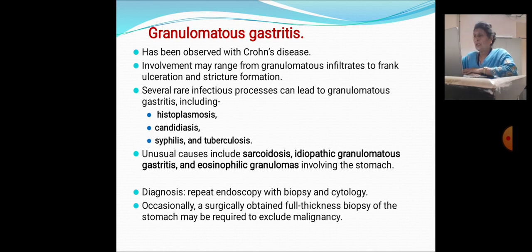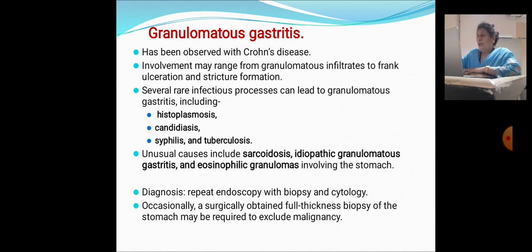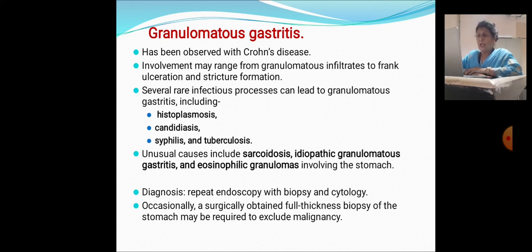Granulomatous gastritis has been observed with Crohn's disease; involvement may range from granulomatous infiltration to frank ulceration and stricture formation. Several rare infectious processes can lead to granulomatous gastritis, including histoplasmosis, candidiasis, syphilis, and tuberculosis. Unusual causes include sarcoidosis, idiopathic granulomatous gastritis, and eosinophilic granuloma involving the stomach. Diagnosis requires repeated endoscopy, biopsy, and cytology; occasionally a surgically obtained full-thickness biopsy of the stomach may be required to exclude malignancy.